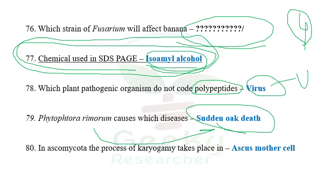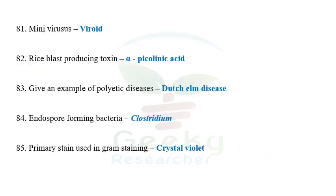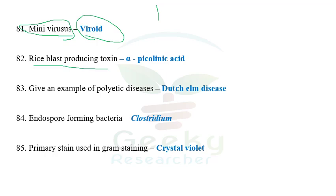The next question: in Ascomycota, the process of karyogamy takes place in ascus mother cells only. The next question: viroids are otherwise called mini viruses. Among the options — virus, prions, viroid, phytoplasma — viroids are otherwise called mini viruses.